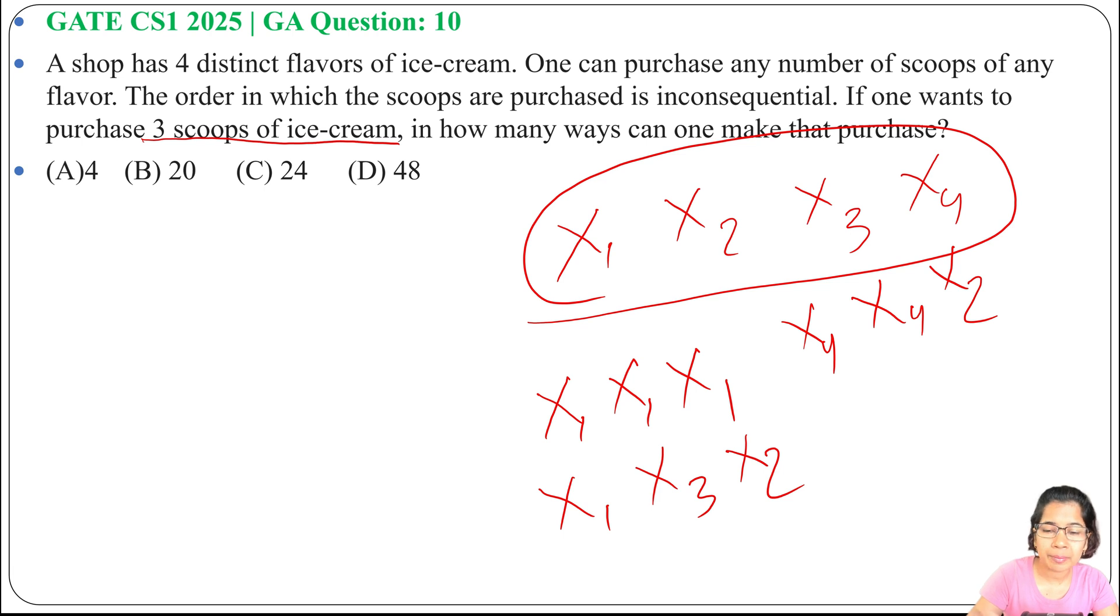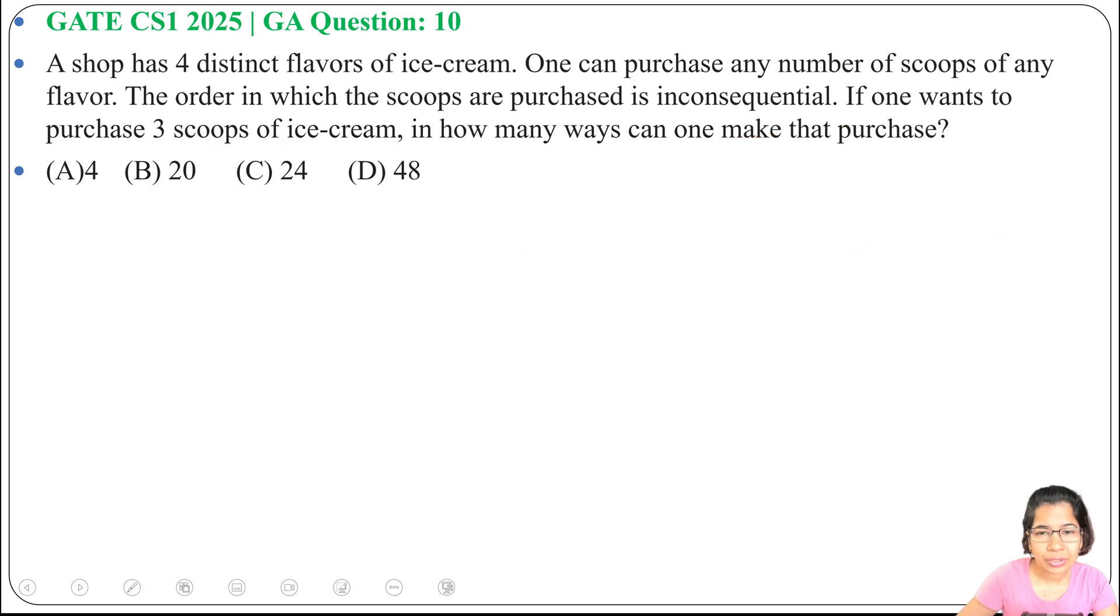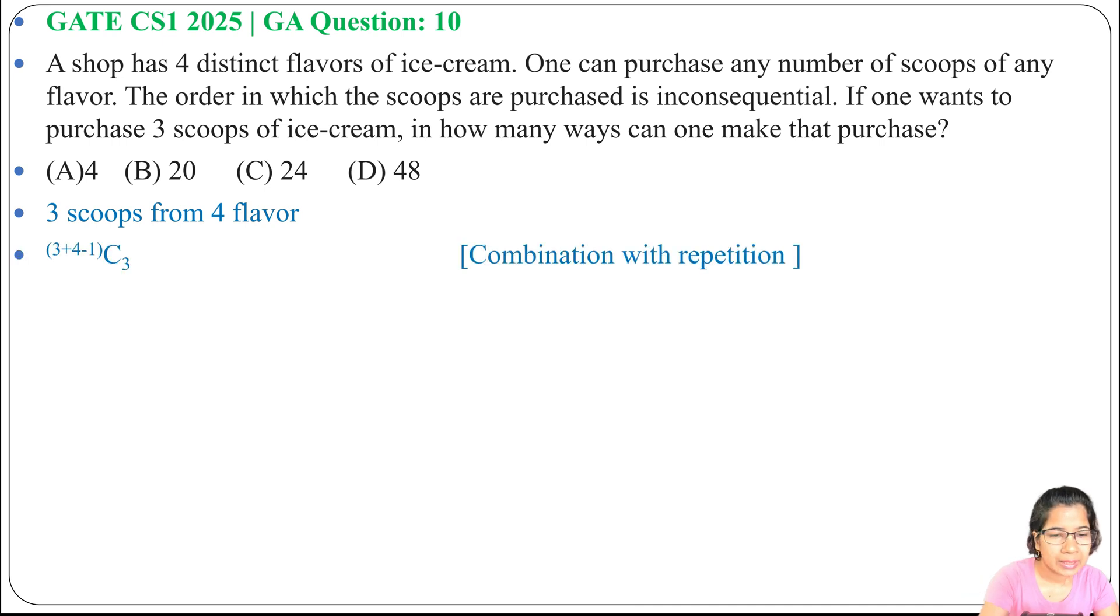can be from any of the x1, x2, x3, x4 with repetition. During lecture I already discussed a formula that is combination with repetition. So for combination with repetition, it will be C(3+4-1, 3).